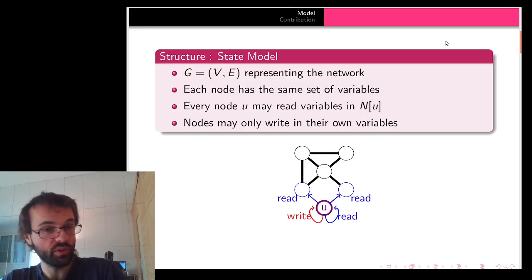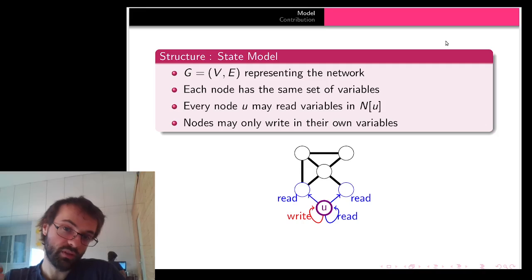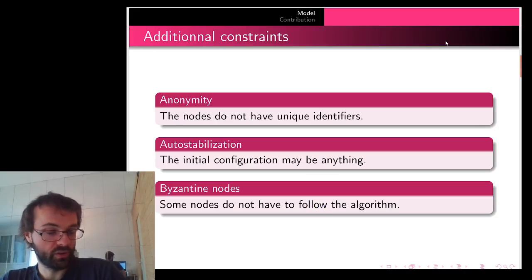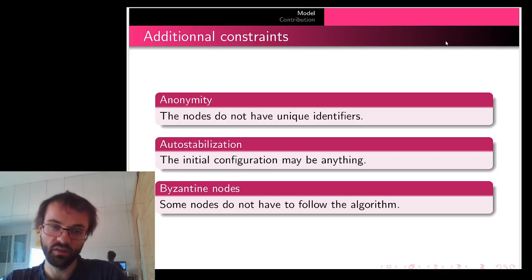We work under the state model where each node has the same set of variables. Each node may read variables in its neighborhood but may only write in its own variables. We also have the constraint of anonymity. We work in auto-stabilization and suppose that there may be some Byzantine nodes that are not bound by the rules of the algorithm.